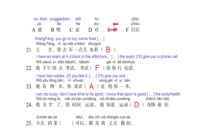Now the last sentence, number 25: Today's food — blank — all was done by my husband. The only possibility left is letter C, 'hái'. Although the main meaning is 'still', here in combination with 'kěyǐ' we use it to express 'so-so', 'not so good', 'passable'. '今天的菜还可以' — today's food was so-so, passable, not bad. With this, we finish correcting page number 45 in the workbook.